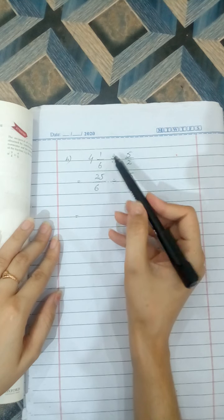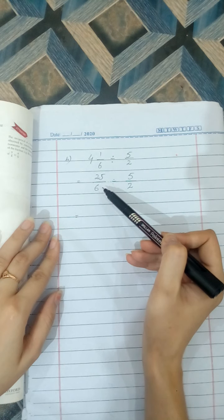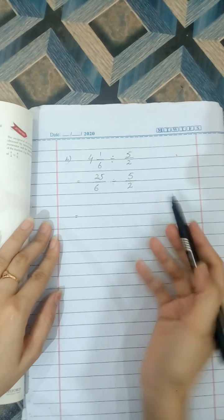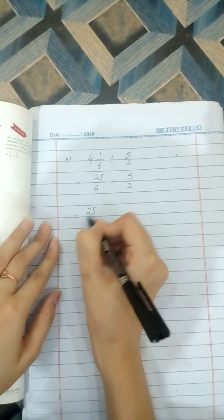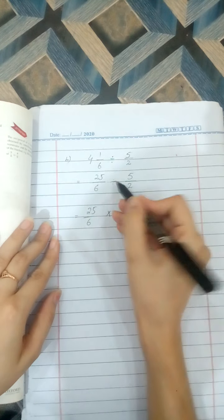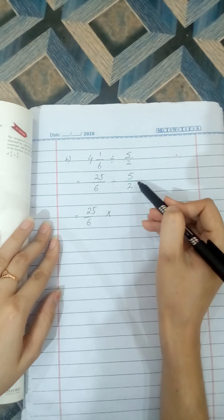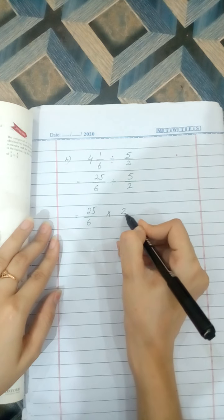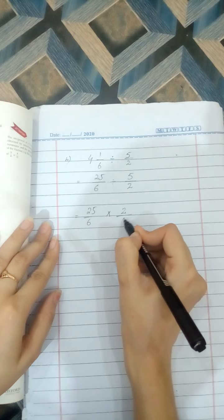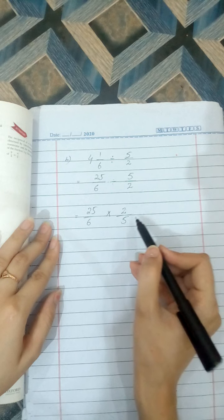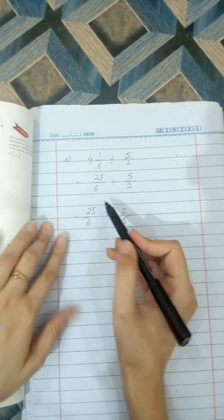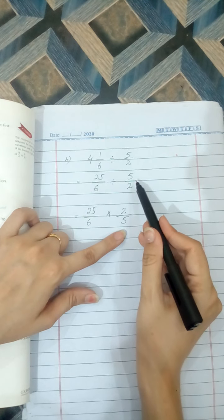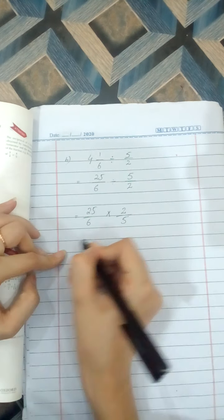Students, you can see that it is an improper fraction. We have changed the mixed fraction into improper fraction. Now division process, these are two fractions and we have to divide it. It has a method that we change the sign with multiply, division to multiply, and take the reciprocal of this fraction. This is the reciprocal of above fraction. We have changed the sign division to multiplication and take the reciprocal of above fraction, clear students.